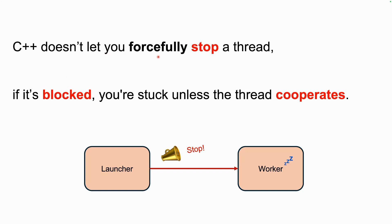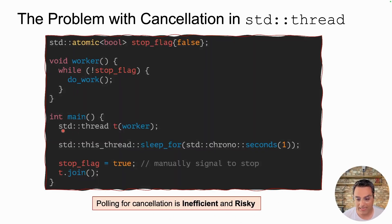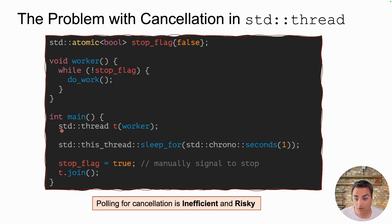Remember that in C++ you cannot forcefully stop a thread. If the thread is blocked, you're stuck unless the thread cooperates — it has to get unblocked somehow and then exit so that it gets terminated. Here's an example: in main I launch a classic std::thread and pass my worker function to it. I want to somehow notify my worker function to stop. Notice the worker has a while loop that keeps reading an atomic variable stop_flag, and as long as it's false it does some work. In main I wait for one second and then set stop_flag to true to indicate to the worker it should stop, then call t.join.